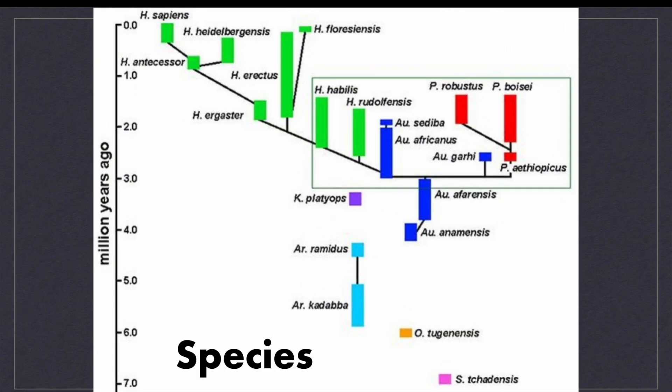Now let's talk about different species within genera. It is worth noting down the naming convention. The full name of a species consists of two words: the genus name starting with an uppercase letter and the species name starting with a lowercase letter. The genus Sahelanthropus has only one known species: Sahelanthropus chadensis. The genus Ororin also has only one known species: Ororin tugenensis. There are two known Ardipithecus species: Ardipithecus kadabba and Ardipithecus ramidus.